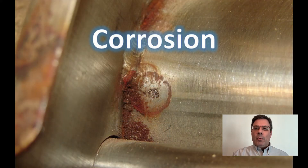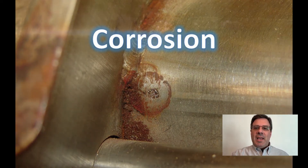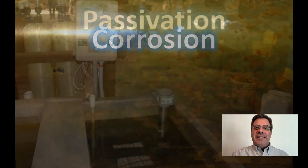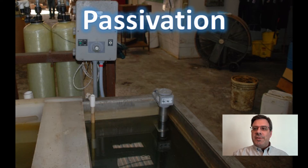The best way to avoid corrosion is to select a heater with the surface material that is resistant to the process chemical at any concentration and almost any temperature. As an example, let's take a look at a passivation tank. The process chemistry is nitric acid, which is used to passivate the surface of steel parts.